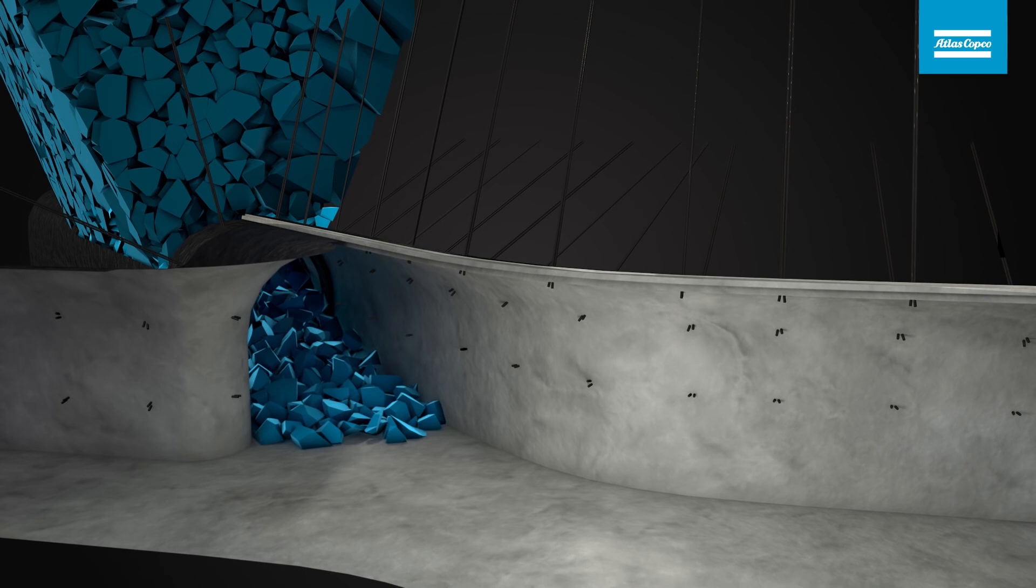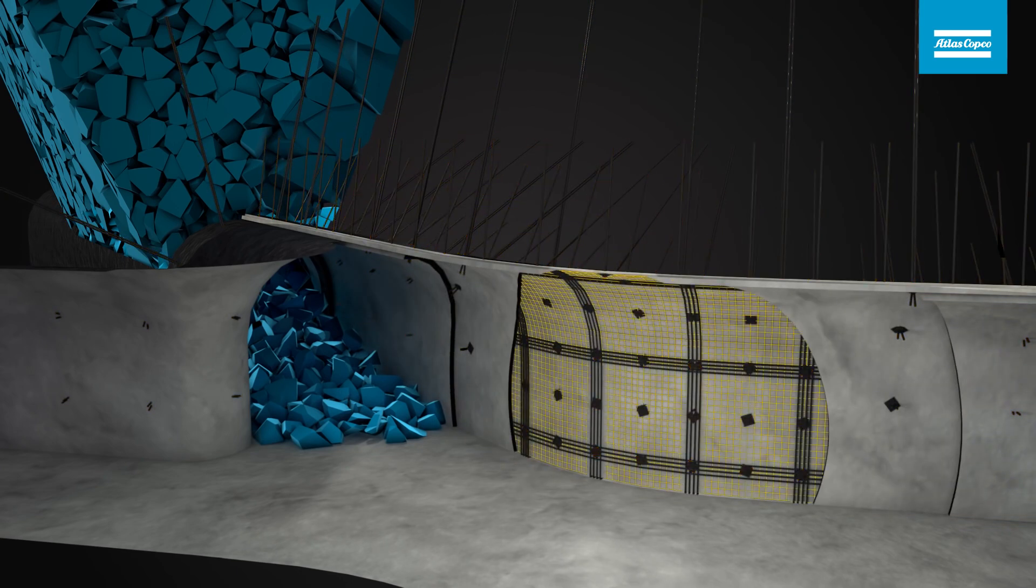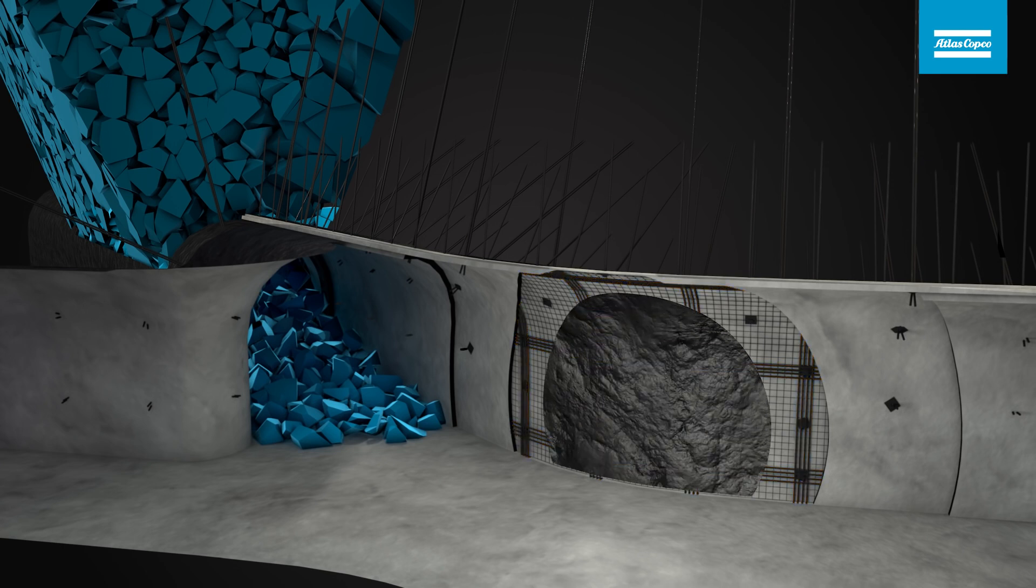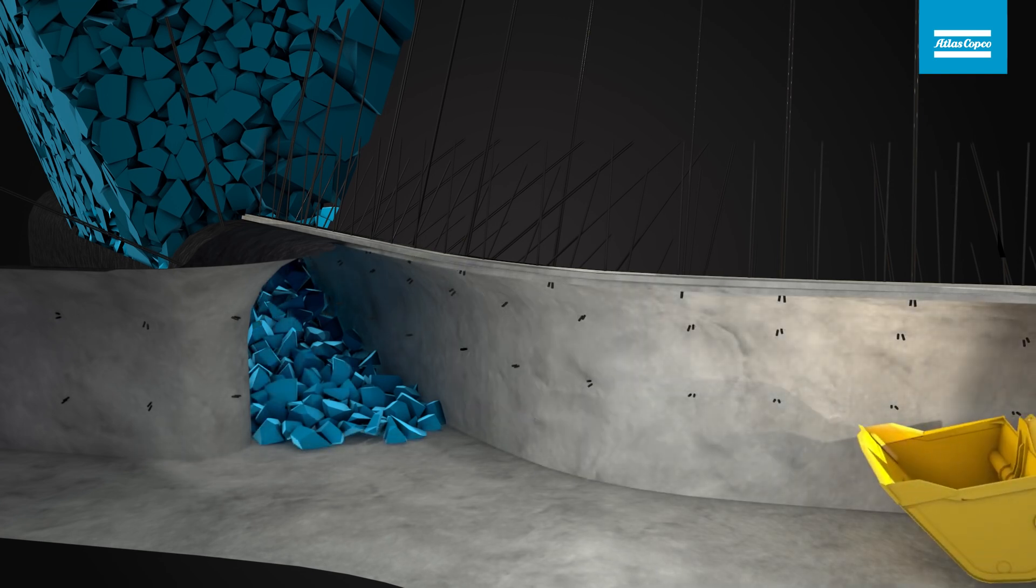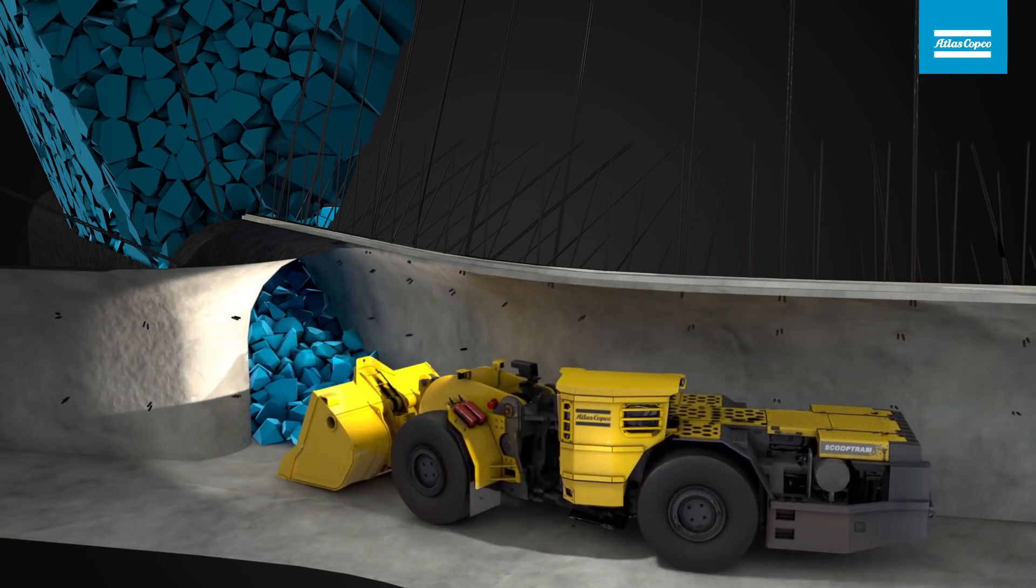Substantial rock reinforcement, such as steel arches, sprayed concrete, cable bolts, rock bolts, steel mesh and straps, are usually required due to several factors associated with block caving, including extreme rock stress changes and a long production period.